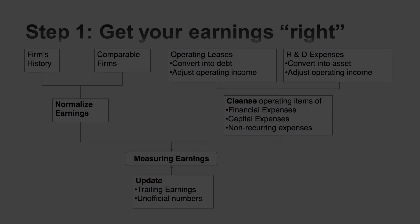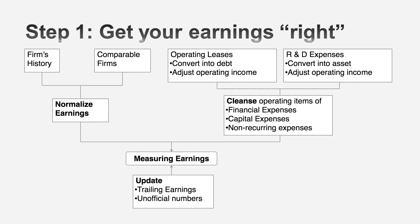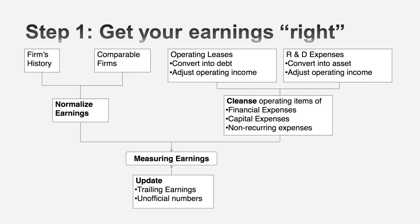So I have to reverse leases from operating expenses to financial expenses. What I essentially do is take the present value of those lease commitments and discount them back to today using the pre-tax cost of debt as my discount rate — because those lease commitments are pre-tax commitments. As an example, this is the Gap in 2003, a retail firm with hundreds of lease commitments. I've pulled the commitments out of the financial statements and discounted them back using a 6% discount rate, which is my estimate of the pre-tax cost of debt for the Gap in 2003.